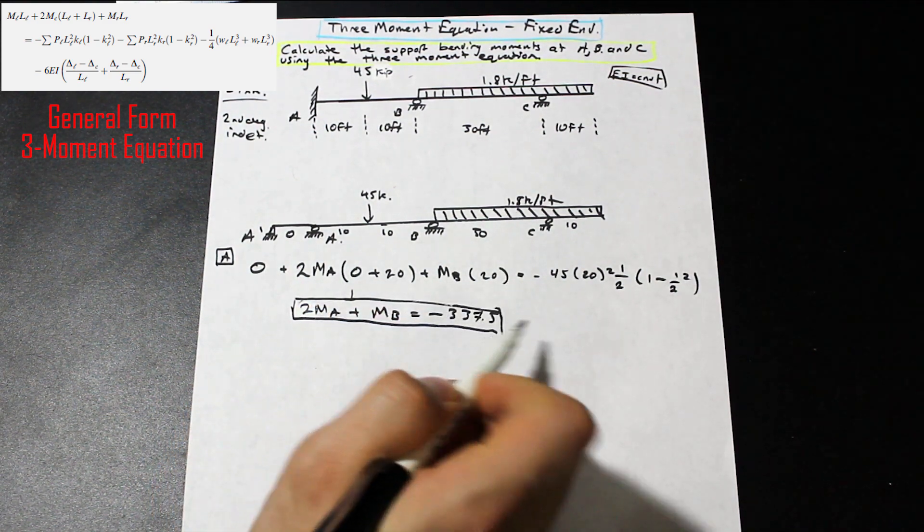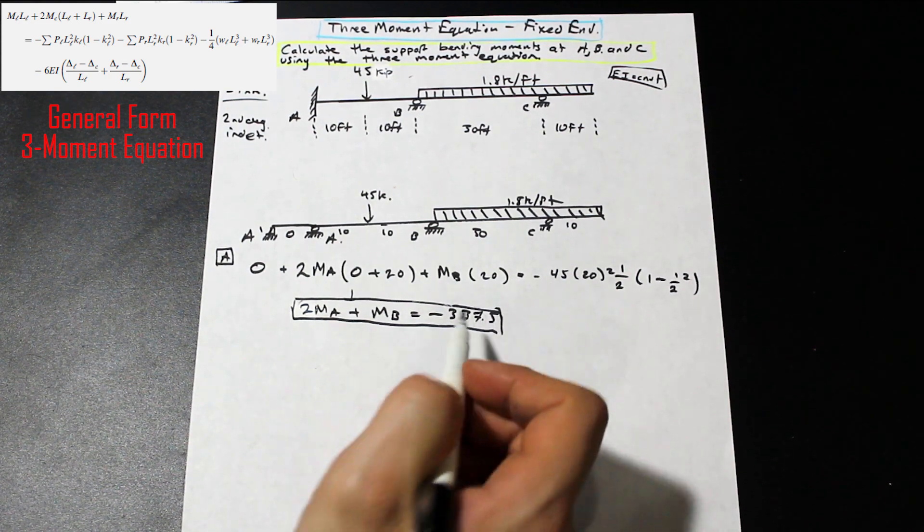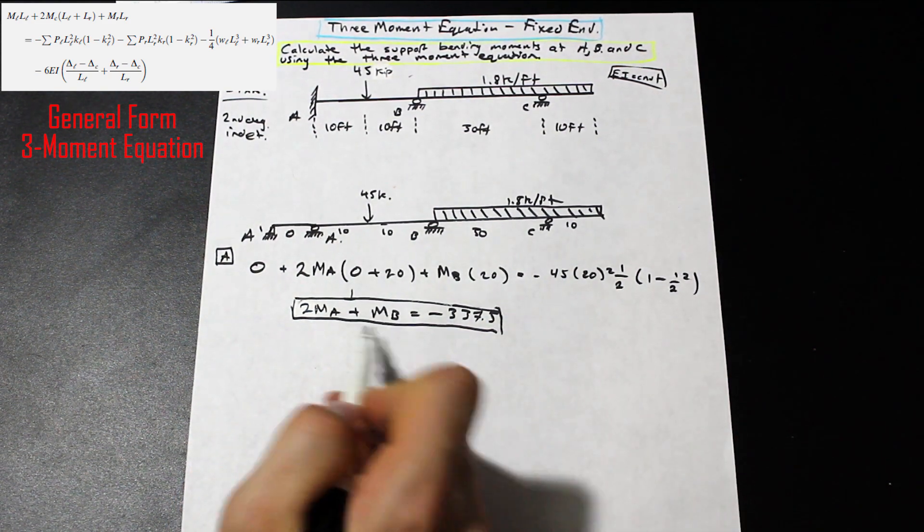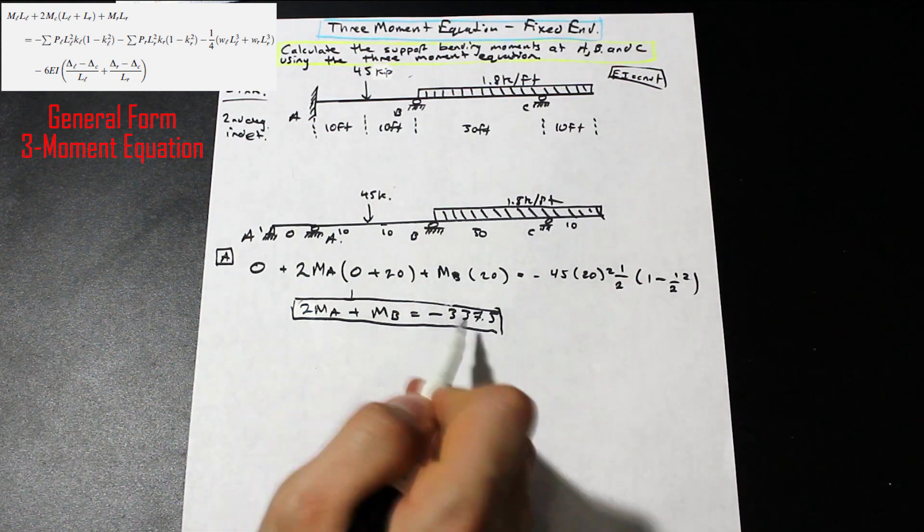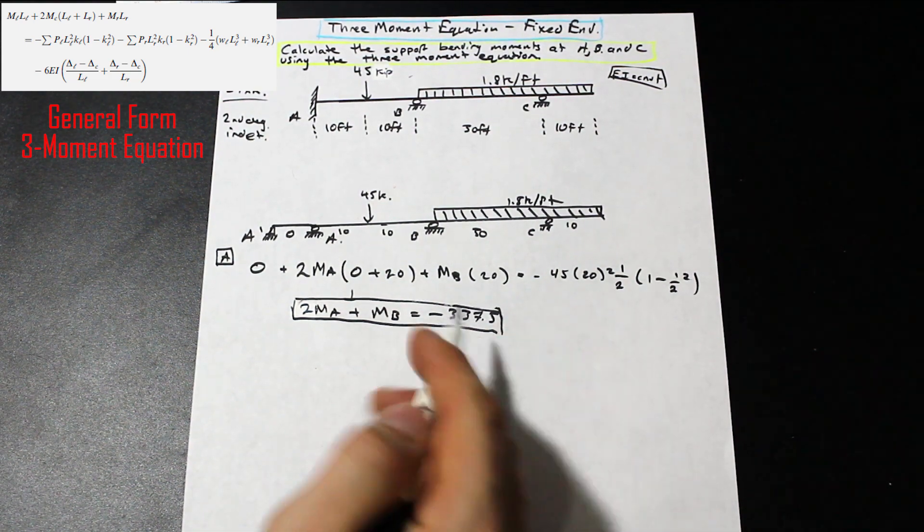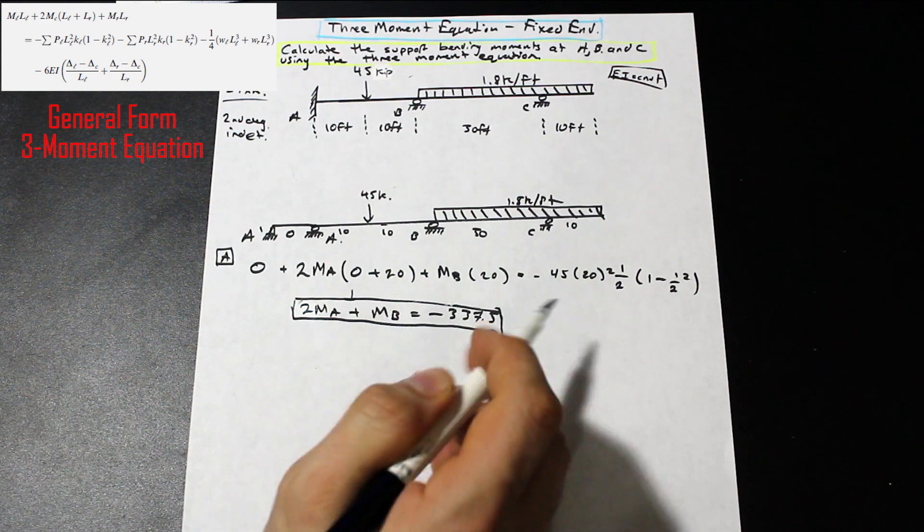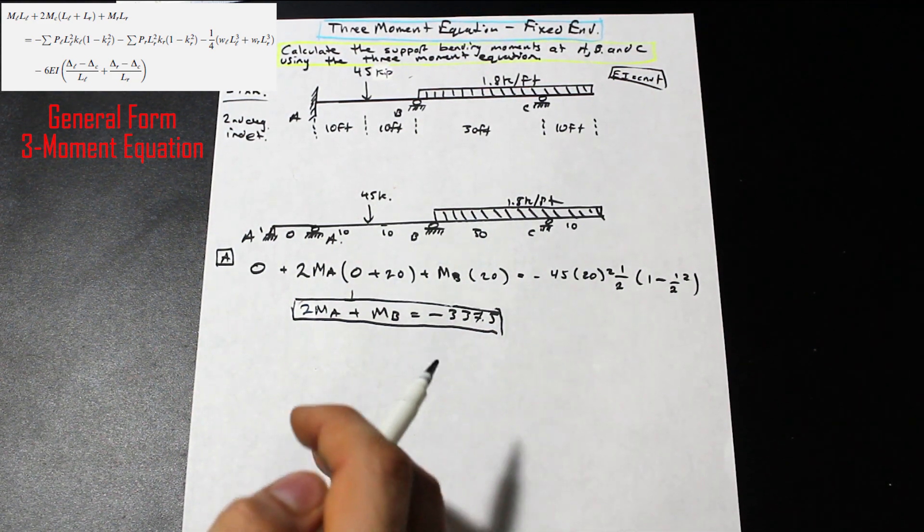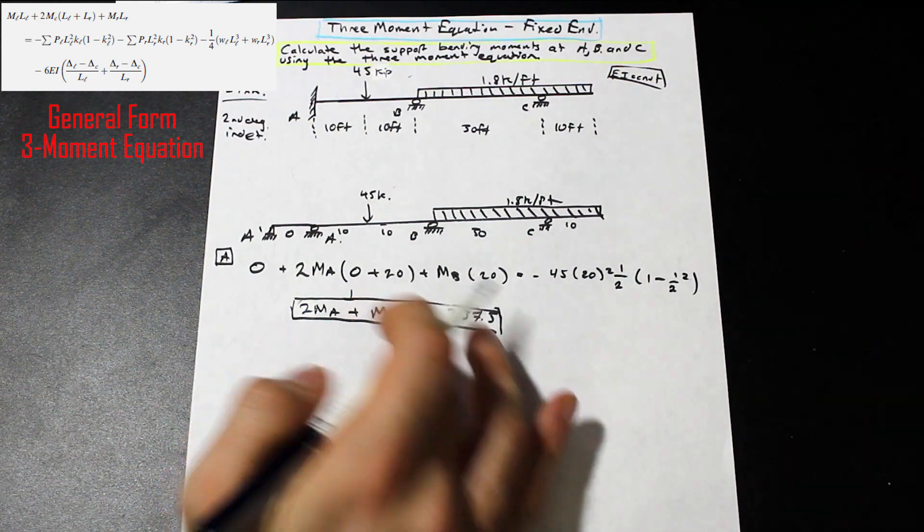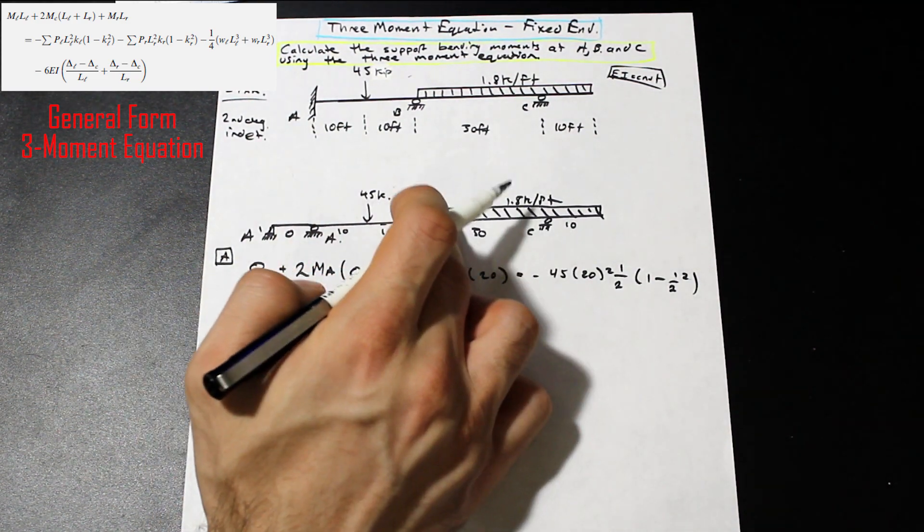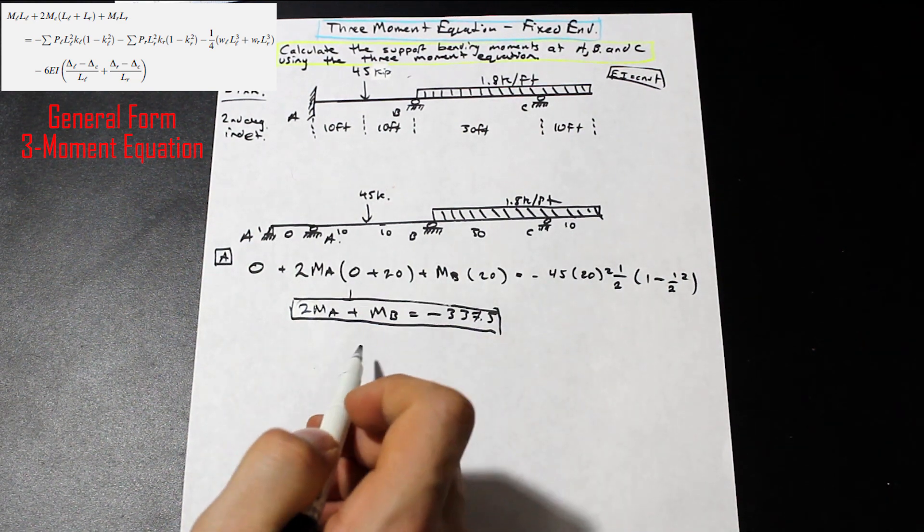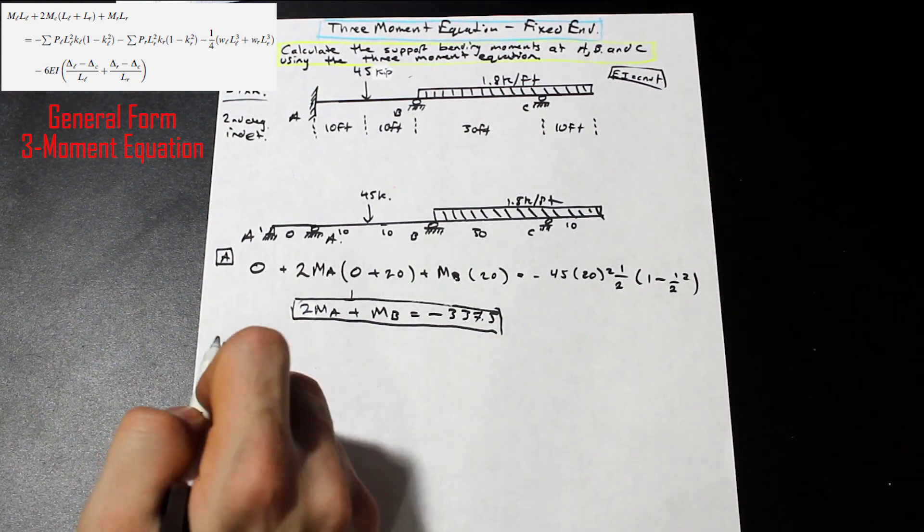So as you'll notice in this second degree indeterminate problem, once we apply the three-moment equation, we don't immediately get a direct answer. We get this equation in terms of MA and MB. So the important thing to note here is we're going to need to apply the three-moment equation again. We're going to need to apply it once for A, and then we're going to need to apply it once for B. And once we apply it for B, then we're going to have two equations, and we can go ahead and we can solve.